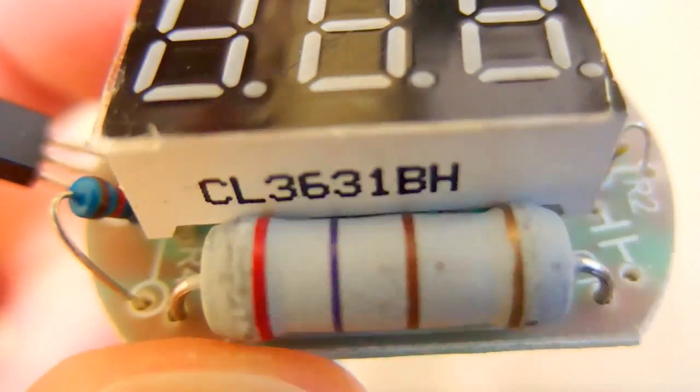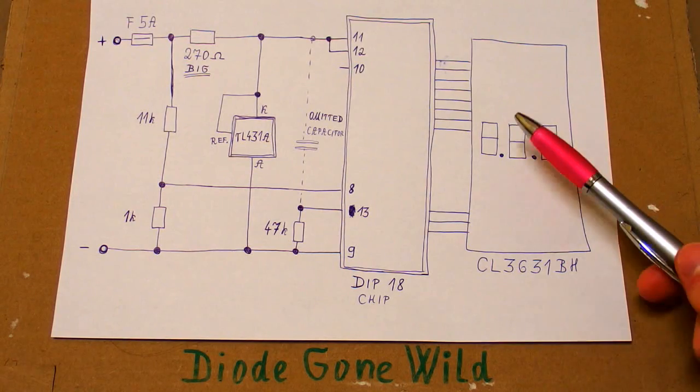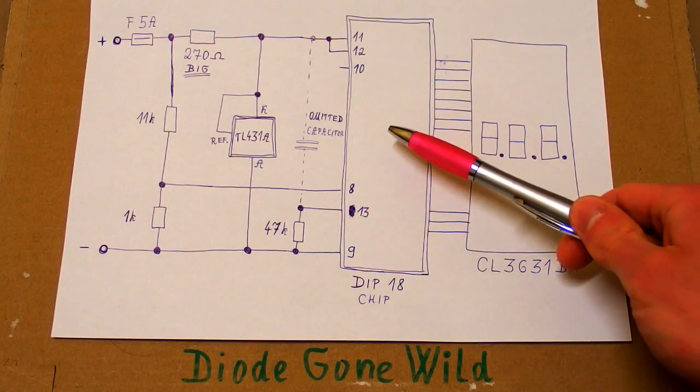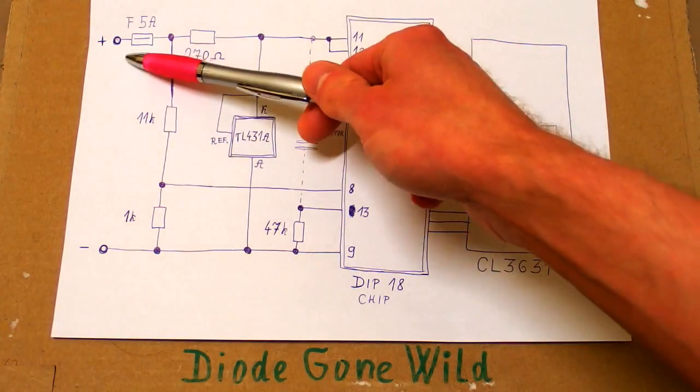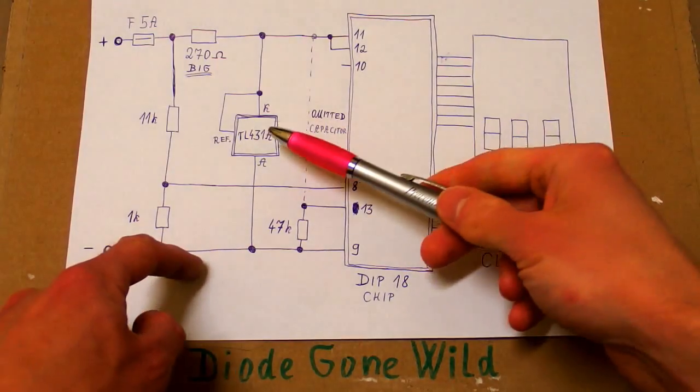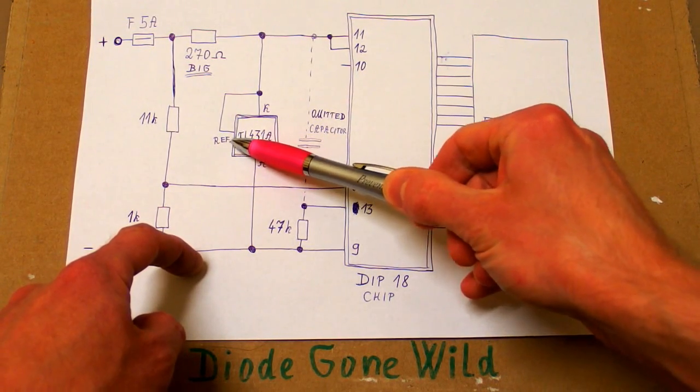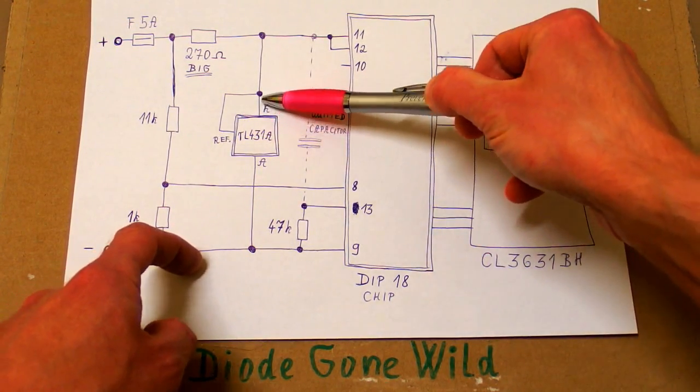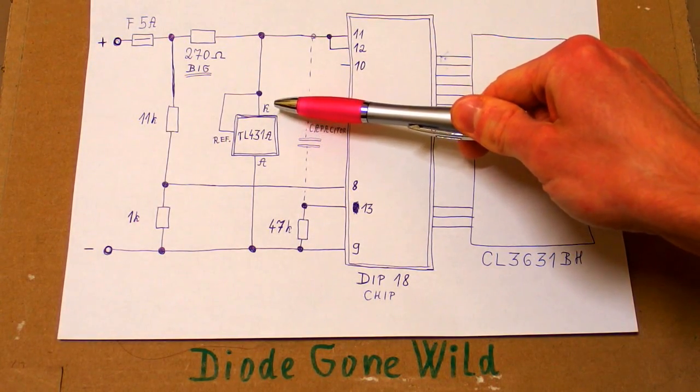Let's draw a schematic. So here's the schematic and it's really simple. There is just a display, the chip, four resistors, the voltage reference and of course the crazy fuse. The voltage reference is connected the simplest way, with the reference pin connected directly to the cathode. In this configuration it simply works as a 2.5-volt zener diode.